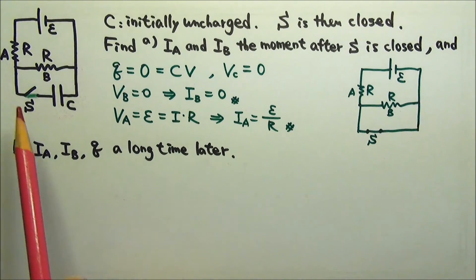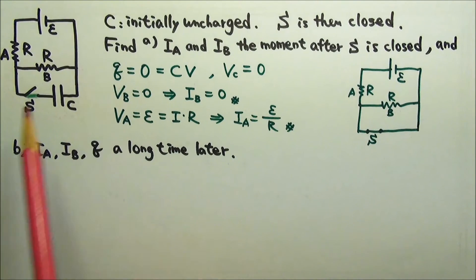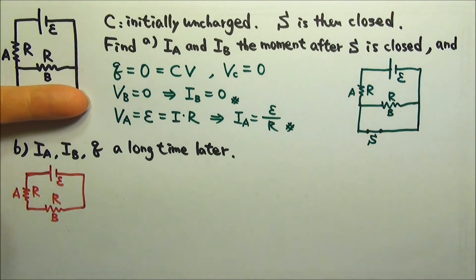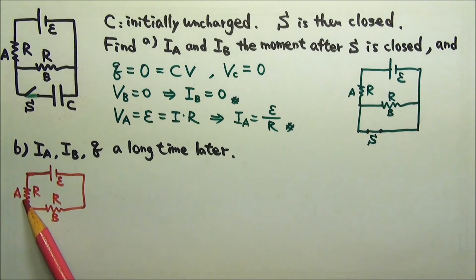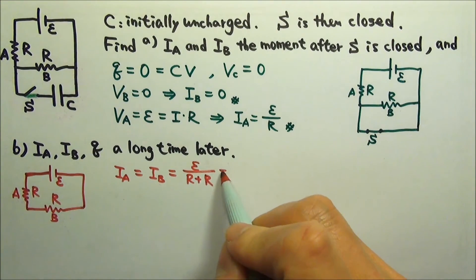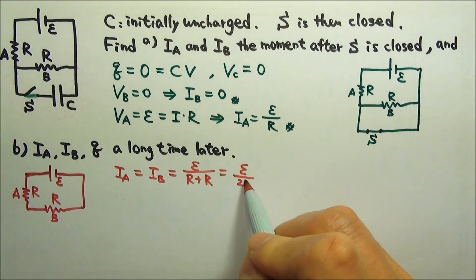Therefore, if we cut the wires here and there, it will not make any difference. With this segment cut, the circuit is just like this. Resistors A and B are in series, so they get the same current, which is the EMF divided by the equivalent resistance R plus R. So this is E over 2R.